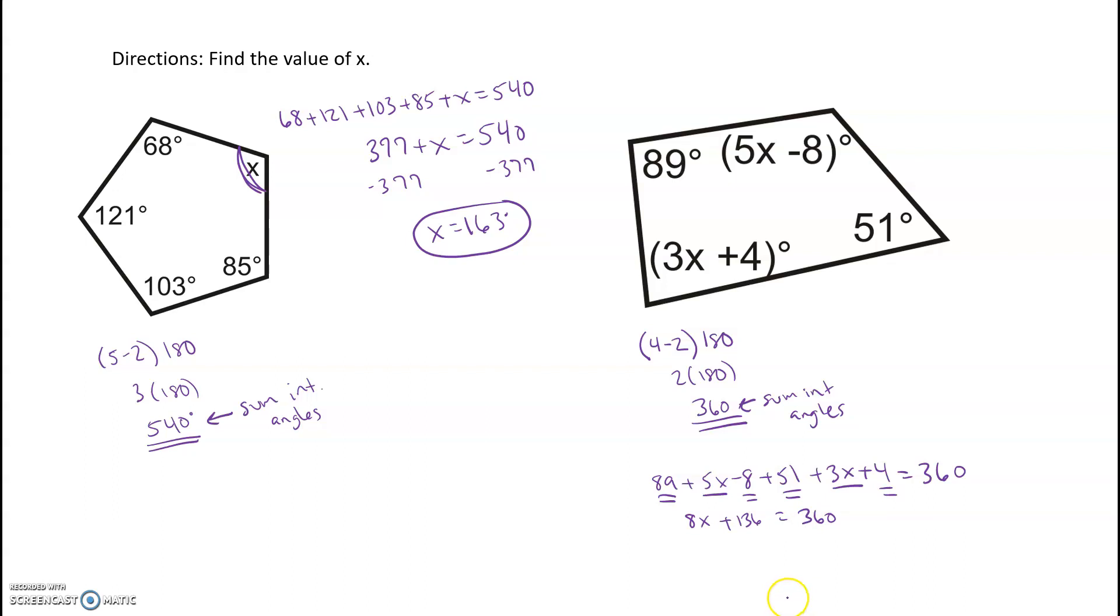136 still equals 360. So we just did some combining like terms. We're going to subtract 136 from both sides and we'll get 8x equals 224. Then we'll divide both sides by 8 and get x equals 28. Again, in this problem I did tell you to find the value of x. You could always plug it in to each of these and make sure that all your angles add up to 360. Make sure we've done triangles. Now this is just expanding it to different shapes.